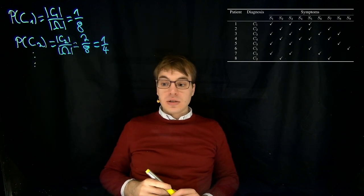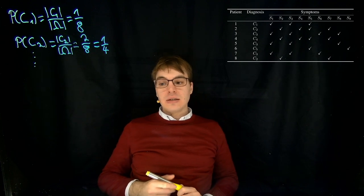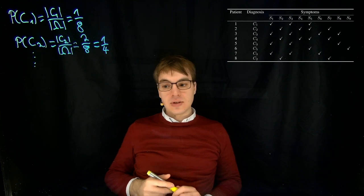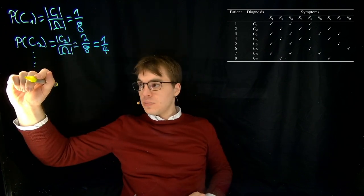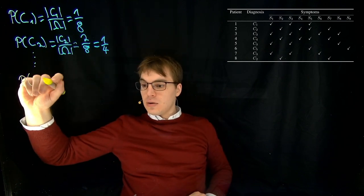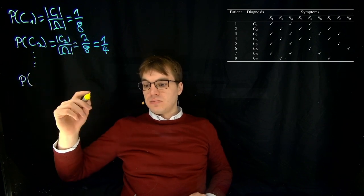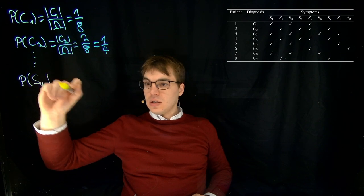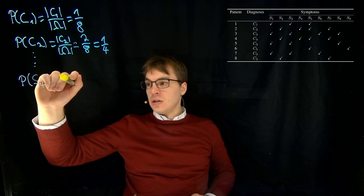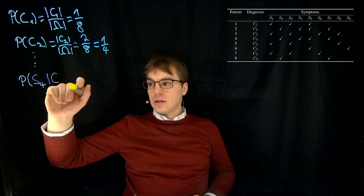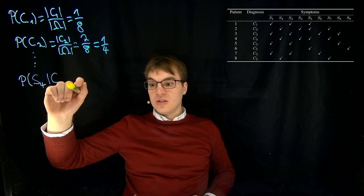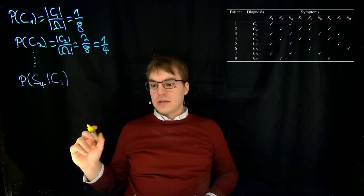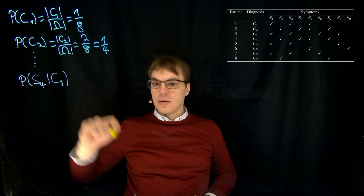And in order to now compute the posterior probabilities, we actually have to do a trick or something in two steps. So first, we want to compute our probabilities of our symptoms given the condition that a certain diagnosis or disease has to be applied. So let's first do that for C1.